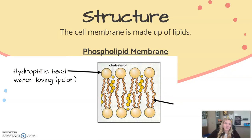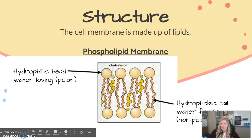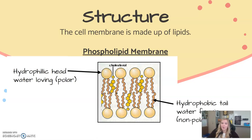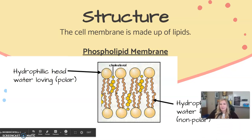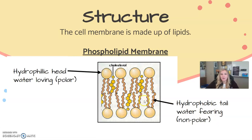The hydrophilic head is water-loving and is found on both the outside and inside of the cell, facing the water on each side. The hydrophobic tail is water-fearing, also known as non-polar. These tails don't like to interact with water, so they arrange so that the water-loving molecules are on the outside and the water-fearing molecules are on the inside, so they don't have to interact with water.